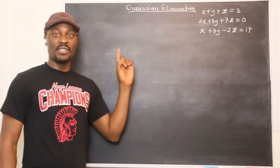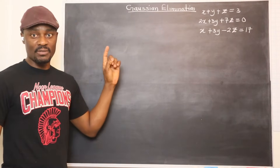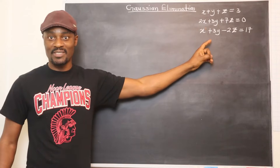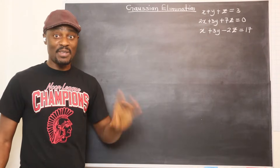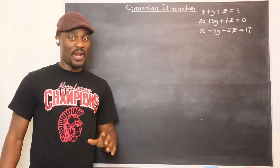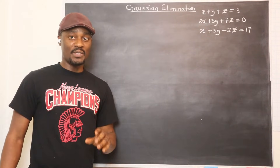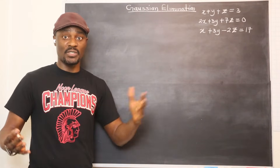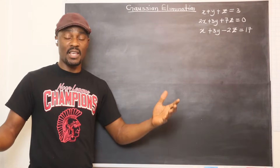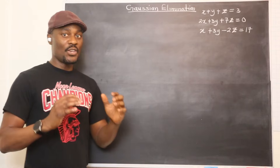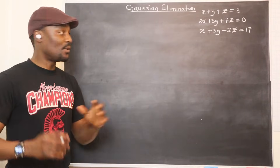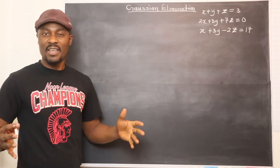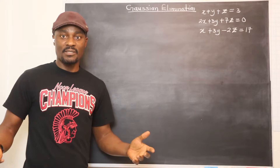We will be using Gaussian elimination to solve this system of equations that has three variables. Whenever you have more than two variables in a system of equations, or what you call simultaneous equations, it is better for you to use Gaussian elimination by using a system of matrices.